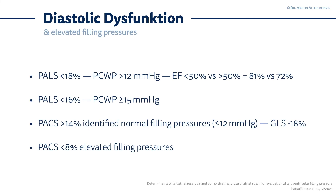When discussing diastolic dysfunction and elevation of filling pressures, there is a paper identifying that PALS below 18% is very likely associated with a pulmonary capillary wedge pressure above 12 mmHg. This was examined in situations of reduced versus preserved systolic function — the ejection fraction was taken into account. In reduced ejection fraction, PALS below 18% was quite good. In preserved ejection fraction, this marker alone was not perfect but gives a hint toward elevated filling pressures. When PALS is even lower — below 16% — pulmonary capillary wedge pressure is most likely above or equal to 15 mmHg.